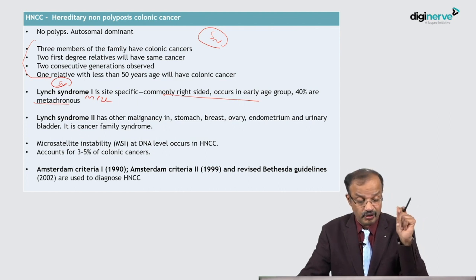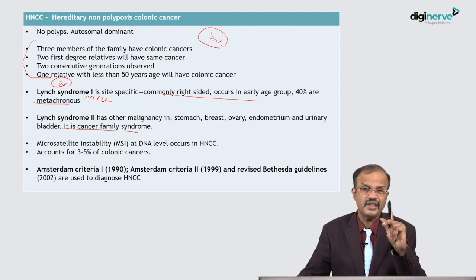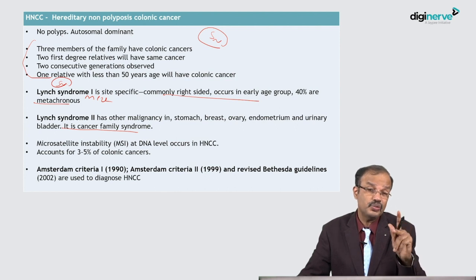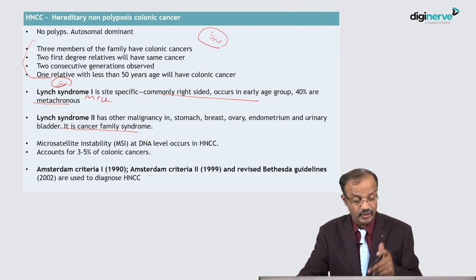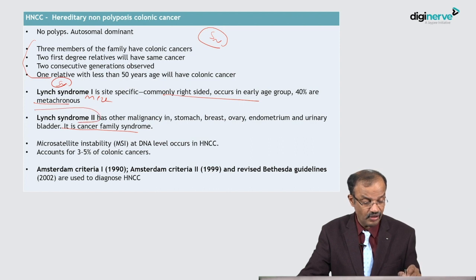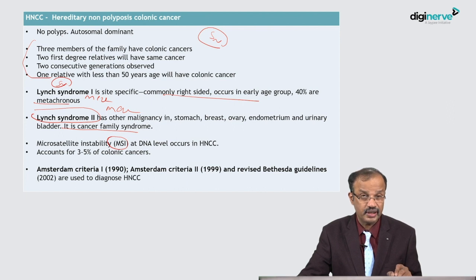Lynch syndrome type 2 involves colonic cancer plus malignancy in other organs — stomach, breast, ovary, endometrium, urinary bladder. It is a cancer family syndrome. Lynch syndrome 1 is isolated right-sided colonic malignancy, while Lynch syndrome 2 is colonic cancer plus cancer in other parts of the body. Microsatellite instability is a very important genetic feature occurring in HNPCC — this is an MCQ question.